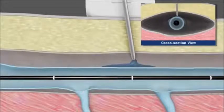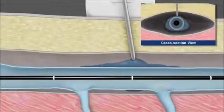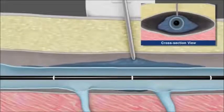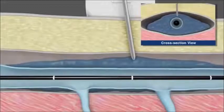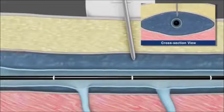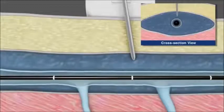Perivenous tumescent anesthesia or saline is then delivered to the saphenous compartment surrounding the vein segment to be treated. This is done to enhance patient comfort, provide a heat sink to protect surrounding tissue, and to improve contact between the vein wall and the catheter during treatment.